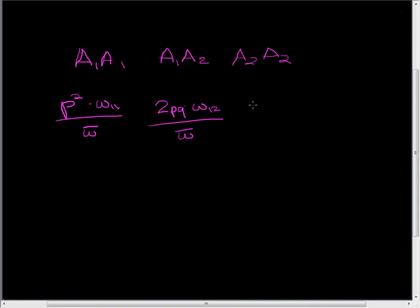At time equals 1 for genotype A2A2, we're going to have the starting frequency of A2A2, times the fitness of A2A2, divided by the average fitness of the population.